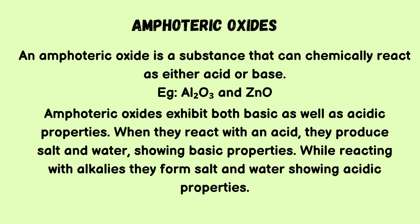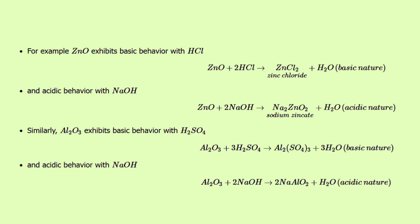Amphoteric oxides can chemically react as either an acid or a base. Examples include aluminium oxide and zinc oxide. They exhibit both basic and acidic properties. When reacting with an acid, they produce salt and water, showing basic properties. When reacting with alkalis, they form salt and water, showing acidic properties. For example: zinc oxide exhibits basic behavior with HCl, forming zinc chloride and water. Zinc oxide exhibits acidic behavior with sodium hydroxide, forming sodium zincate and water. Similarly, aluminium oxide exhibits basic behavior with sulfuric acid, forming aluminium sulfate and water. Aluminium oxide exhibits acidic behavior with sodium hydroxide, forming sodium aluminate and water.